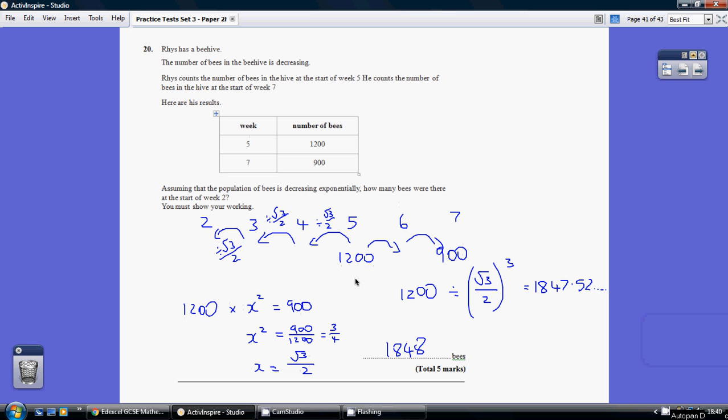What we're saying is the 1,200 multiplied by root 3 over 2 would give us the number of bees after year 6, and then multiply that by root 3 over 2 gives us our 900 bees at the end of year 7.